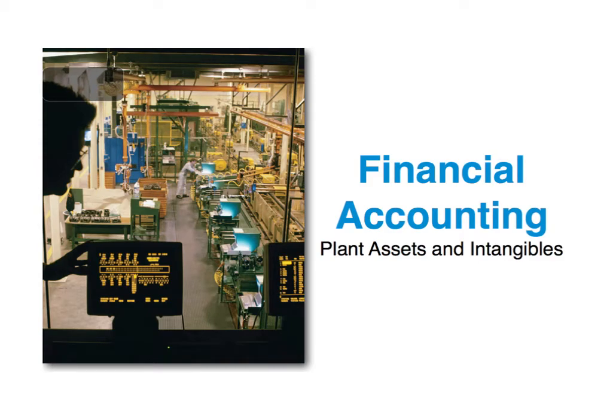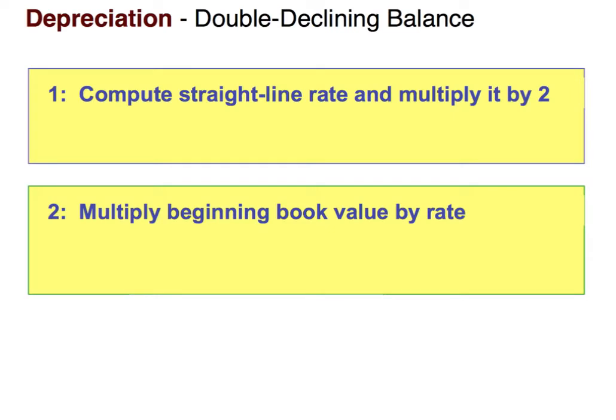In this video we're going to be talking specifically about the double declining balance depreciation method. Double declining balance is a little bit different from the other methods. The first step is to calculate the rate — double declining balance is actually two times the straight line rate. The straight line rate is one divided by the useful life of the asset, so the double declining balance rate is two over the useful life in years.